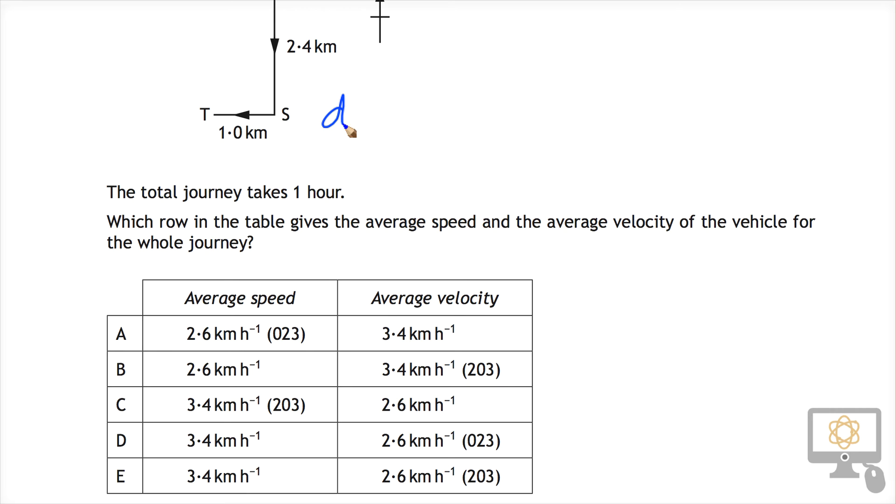Distance equals 3.4 kilometres and that takes one hour. So therefore the average speed is 3.4 kilometres per hour. So it's not C because that's got a direction associated with it. It's either D or E as our options.